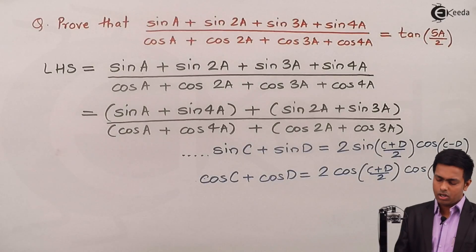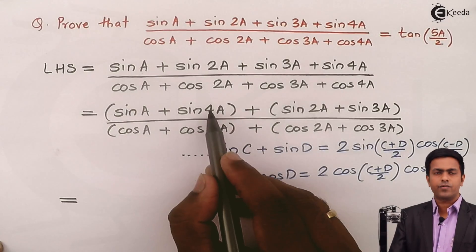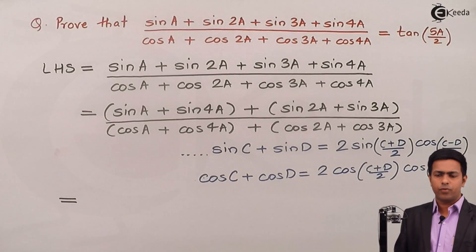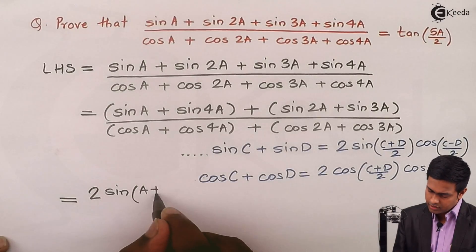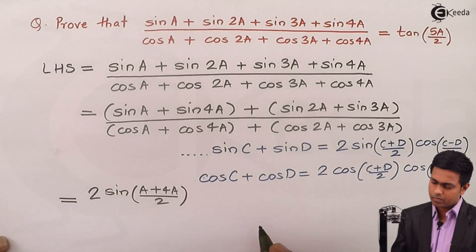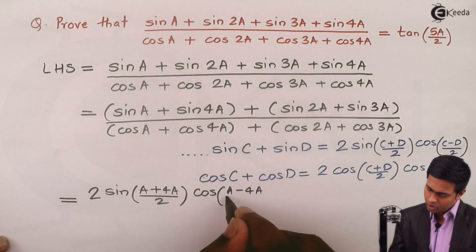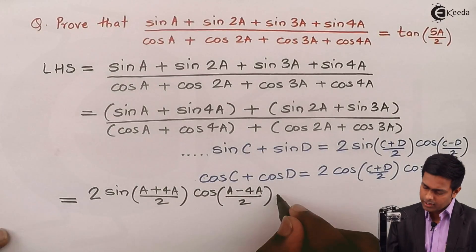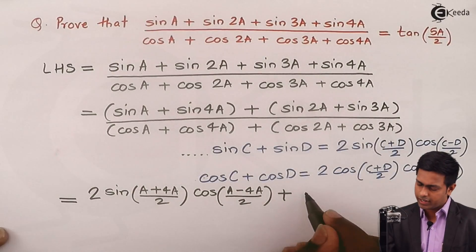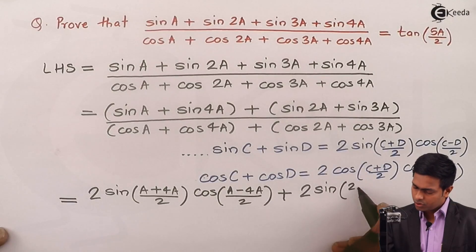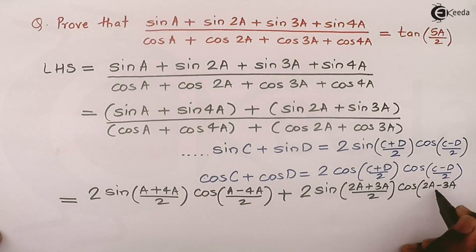For the numerator, applying the formula with C = a, D = 4a gives 2 sin((a+4a)/2) cos((a−4a)/2). Then with C = 2a, D = 3a, we get 2 sin((2a+3a)/2) cos((2a−3a)/2). Simplifying, a + 4a = 5a and 2a + 3a = 5a, giving 2 sin(5a/2) cos(−3a/2) + 2 sin(5a/2) cos(−a/2).